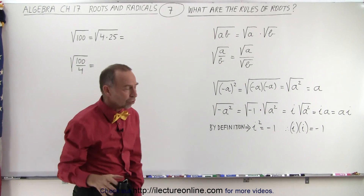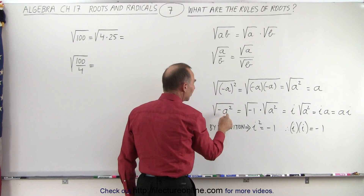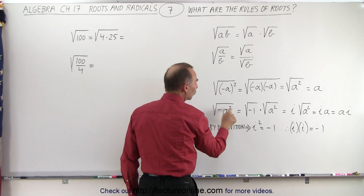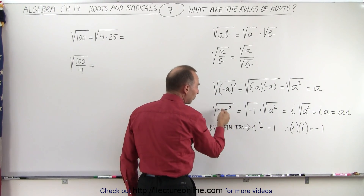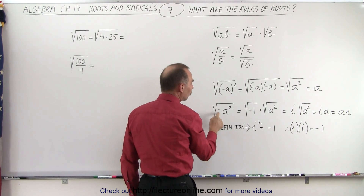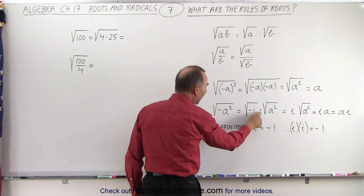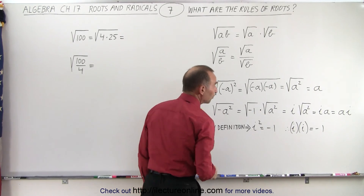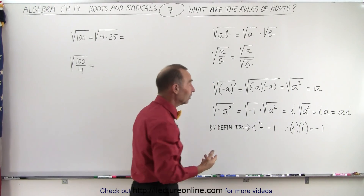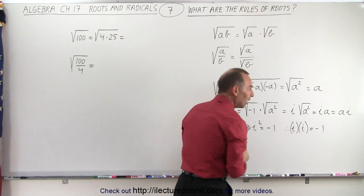Where we get into trouble is if we don't have the parentheses and we have negative A squared — now the square only applies to the A. So essentially we have the square root of negative one times the square root of A squared. Now we know what the square root of A squared is — that's equal to A.